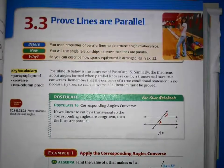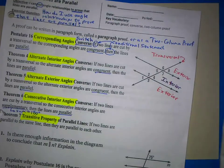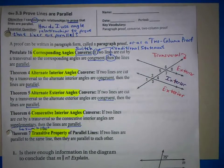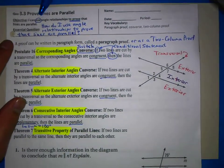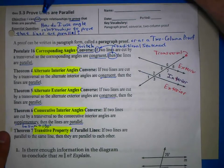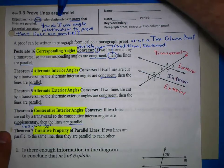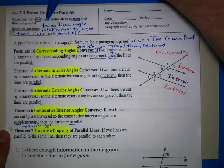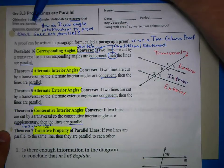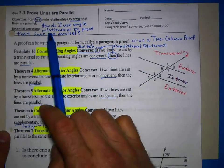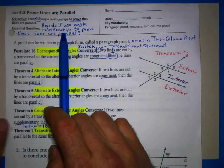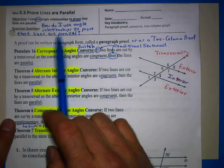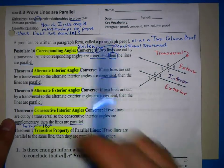Now go back to page 153 in your book, Chapter 3, Section 3. We're tagging along with these notes. Our objective is: I can use — please put a circle around your main verb — I can use angle relationships to prove that lines are parallel. Our essential question is: How do I use angle relationships to prove that lines are parallel?